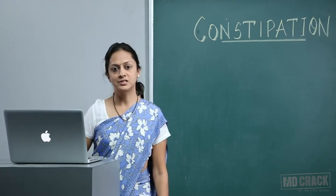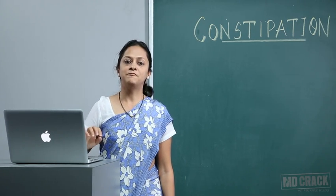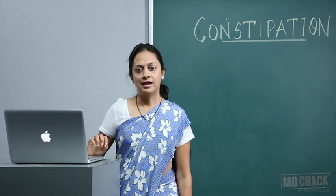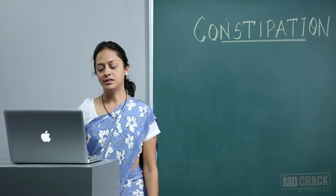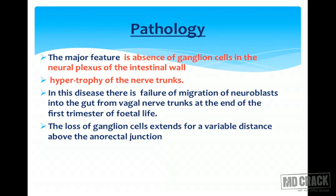Now we'll cover Hirschsprung's disease — a very favorite topic with many exam questions. The pathology: the major feature is absence of ganglionic cells in the neural plexus of the intestinal wall, with hypertrophy of the nerve trunks. There is failure of migration of neuroblasts into the gut from vagal nerve trunks at the end of the first trimester of fetal life.